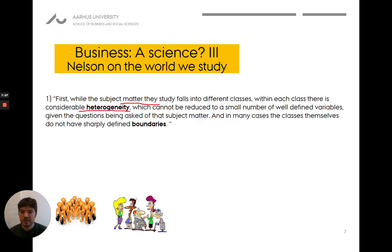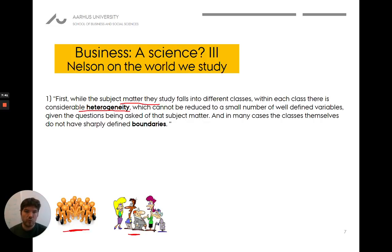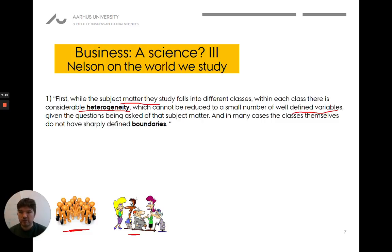If we wanted to study human beings, they are not all identical — they're very different. If we study companies, they're different. If we study entrepreneurs, they're different. We can't reduce them to a very small number of well-defined variables as we can with a planet and say, given these two or three pieces of information, I can make all the predictions you want. It's simply impossible when we talk about firms, people, countries, and stock markets.